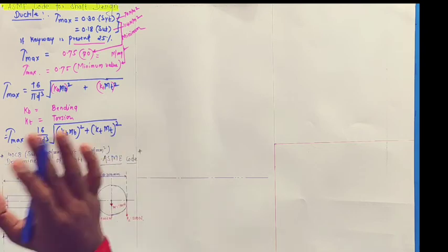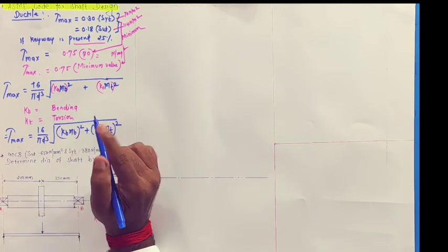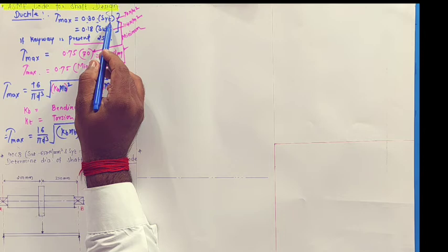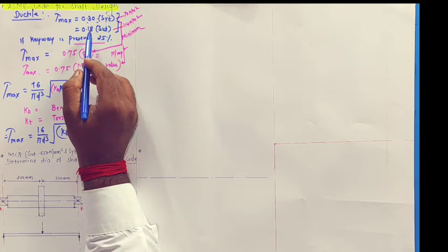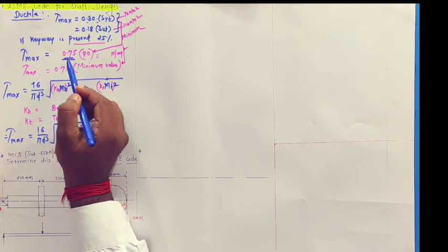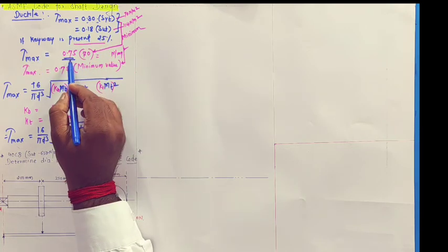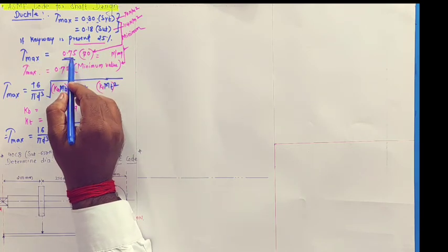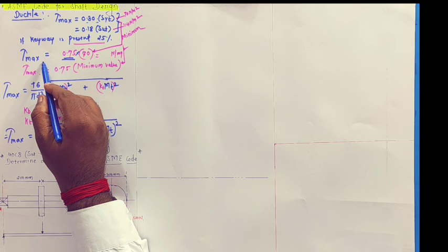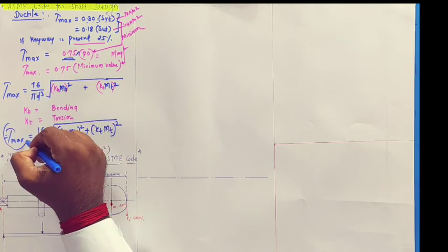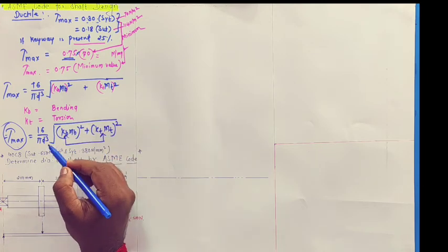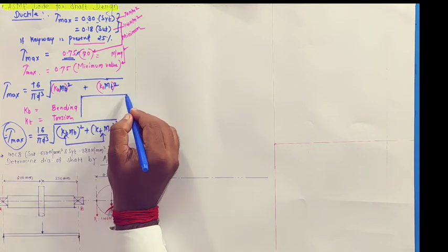So, ASME suggested no change in the equation, only we will have to take ASME factor. First of all, in case of SYT, we will have to take 30 percent, that is 0.30 of SYT. For ultimate tensile strength, we will have to take 0.18. After that, we will have to reduce the value 0.75, that is 25 percent reduction out of 100, it means remaining is 75. So, 75 and select, multiply the value which is minimum of above 2. We will have to take minimum, that is why this will be the tau max, and that we will have to use here. And, as per the equation, we will have to use two parameters, Kb and Kt, it is nothing but bending and torsional parameter, and that can be selected from the chart.